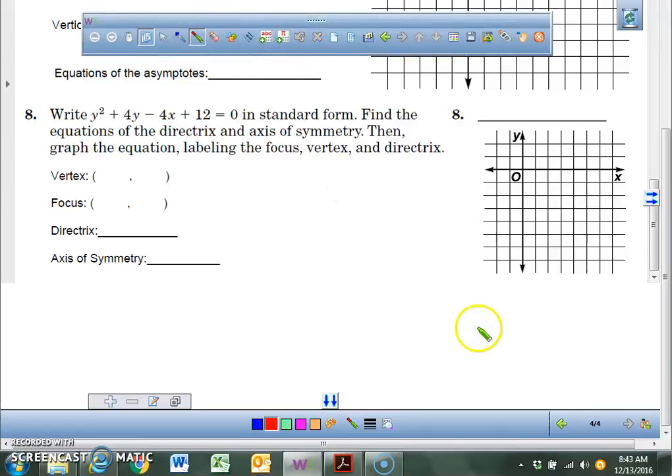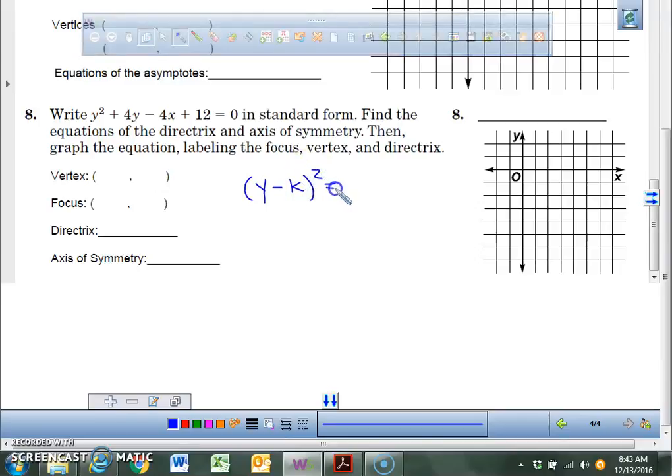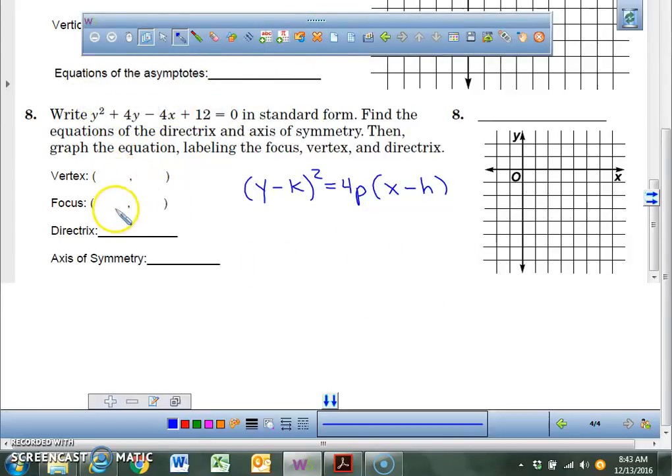We're going to change it to standard form. What I'd like you to do to start this problem off is put y minus k squared equals 4 times the value of p, open parentheses, x minus h. I know it's going to be a y minus k squared because I see the little y squared right here. We're going to take this equation, change it to standard form, then find the vertex, the focus, the directrix, and the axis of symmetry.